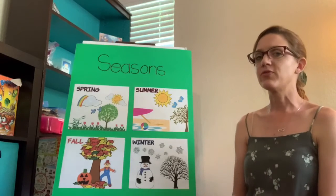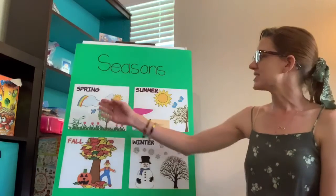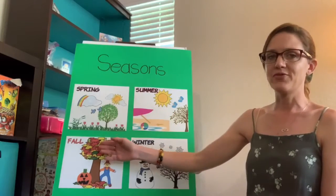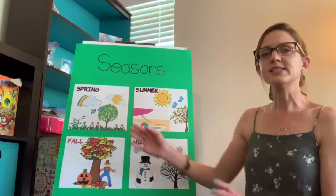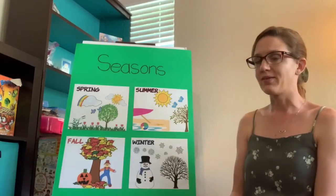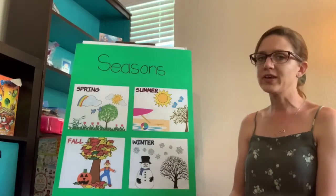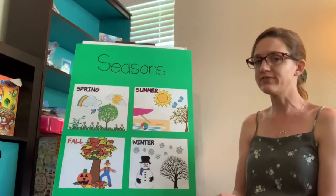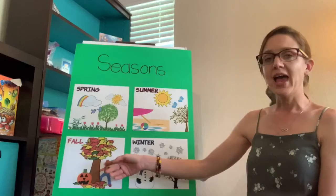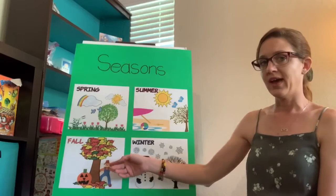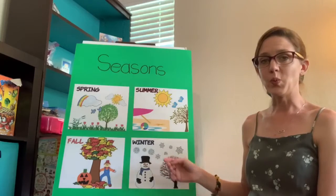How many seasons are in one year? There are four seasons. Do we know the names of those seasons? It's spring, summer, fall, and winter. In spring it's starting to get nice and warm, then in summer it gets nice and hot and we get to swim and do lots of fun water activities. Then it starts getting a little bit cooler and we head into fall, and then it starts getting really cold and we head into winter.